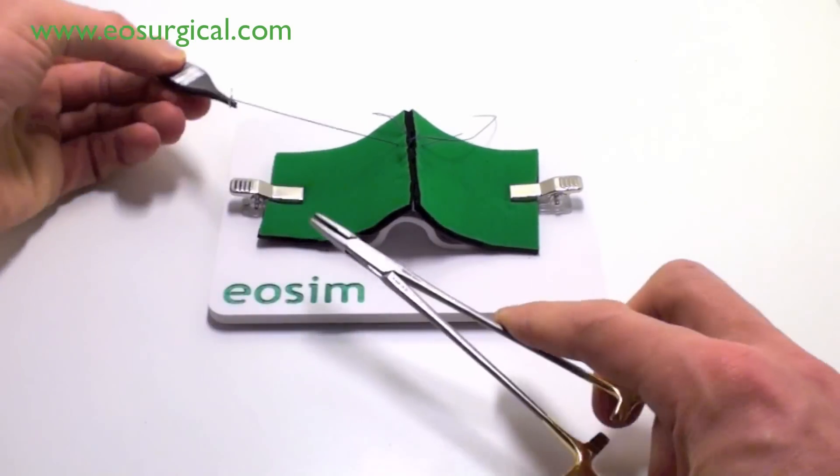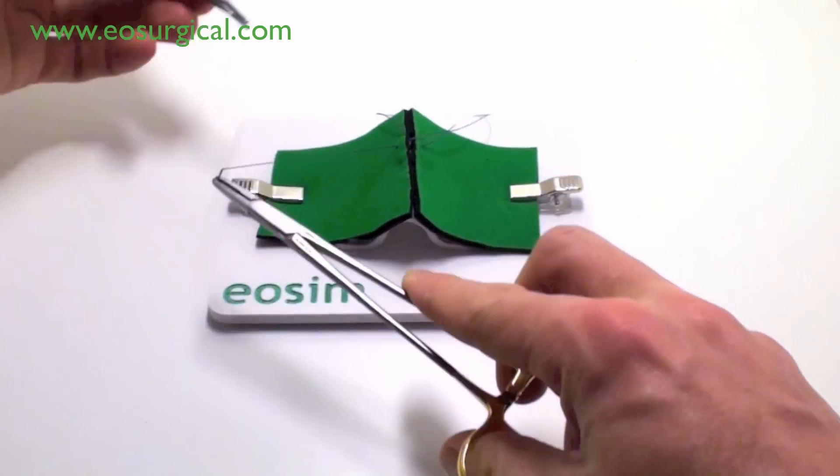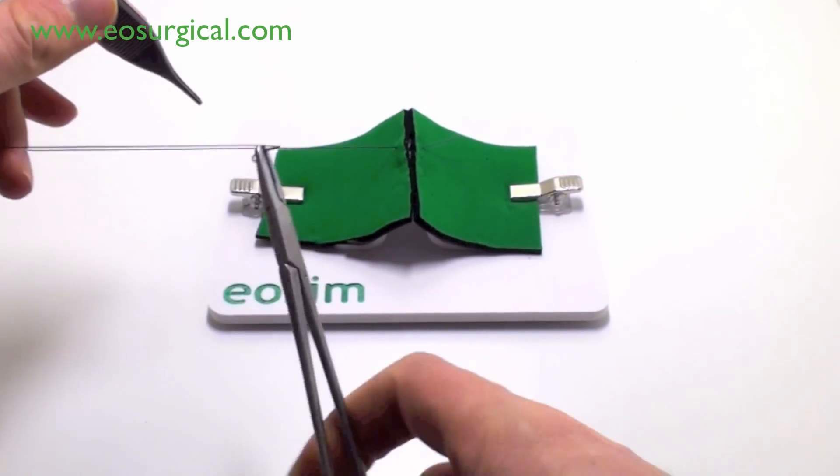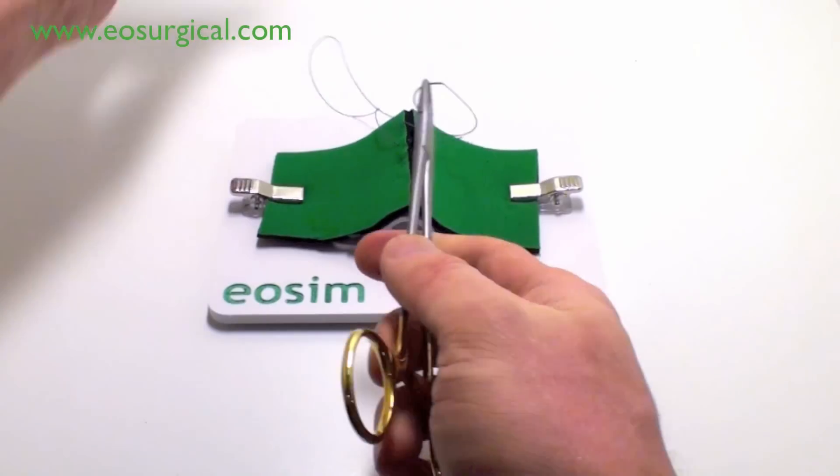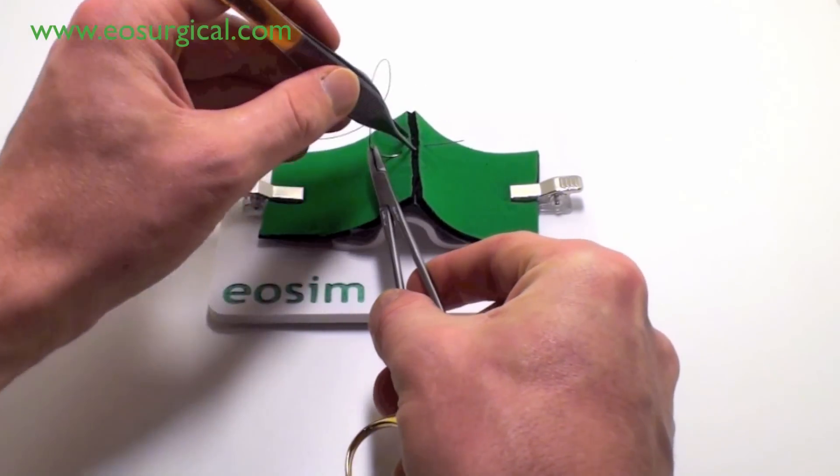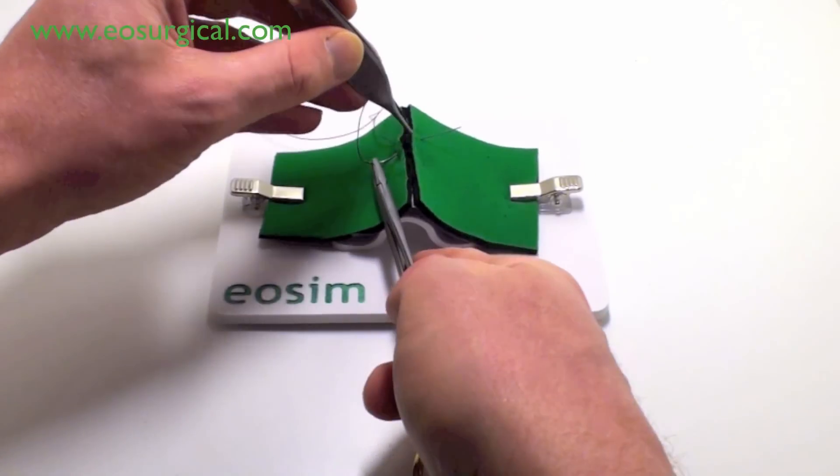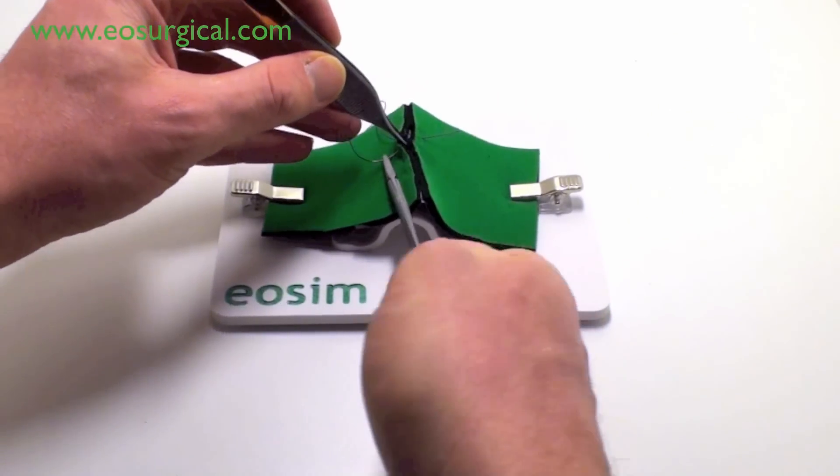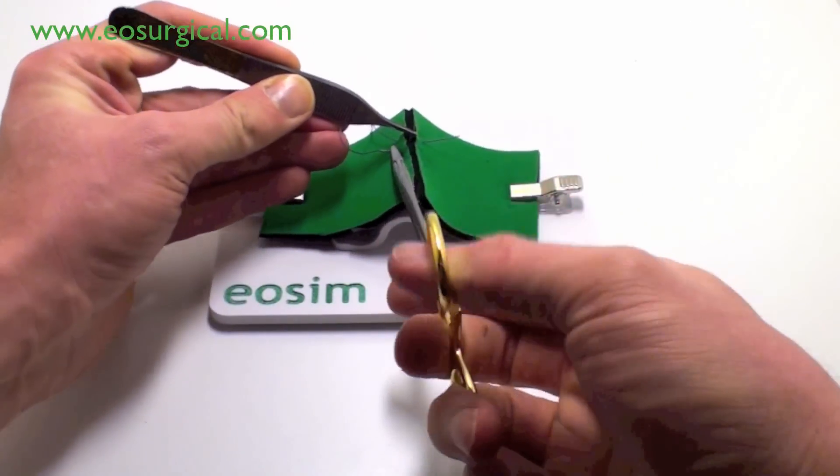Again, here. There's almost a full pronation to supination of the hand. Again, that's a maneuver to reverse the needle. It goes back through the tissues.